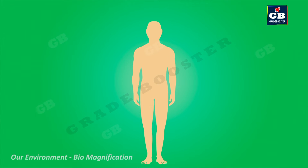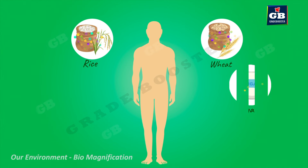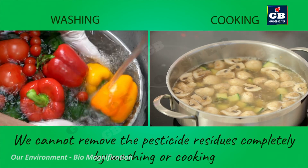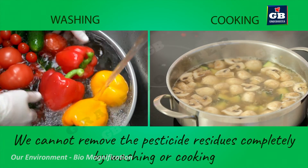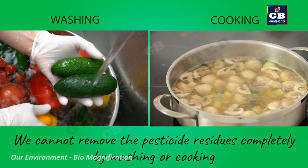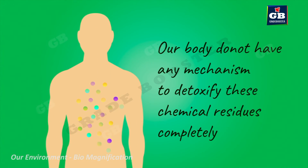This phenomenon is called biological magnification. Every day we use many food ingredients like rice, wheat, sugar, milk, meat, and vegetables. All these things we source from either plants or animals. Pesticide residues from these ingredients enter our body. Even though we wash our food ingredients thoroughly and even though we cook them properly, we cannot completely remove the pesticides from them. Moreover, unfortunately, our body cannot detoxify these chemical residues completely. Our body cannot excrete them also. Hence, they remain in our body and cause various health problems.